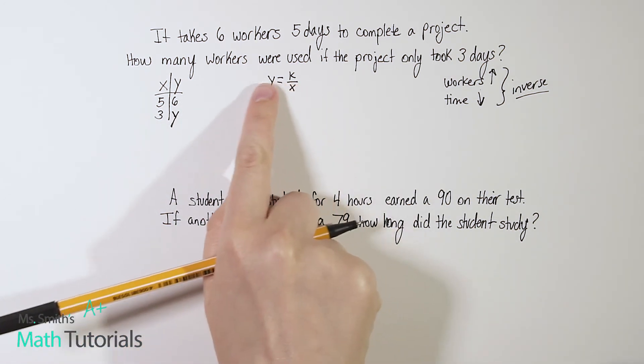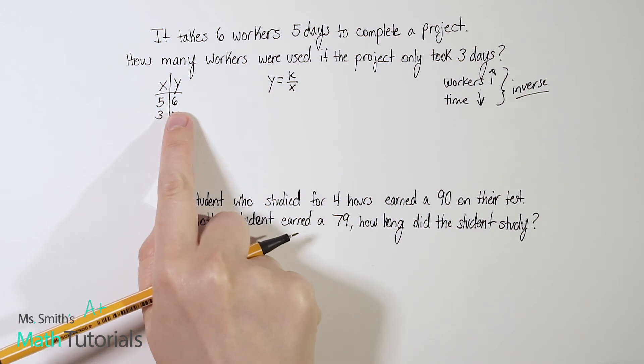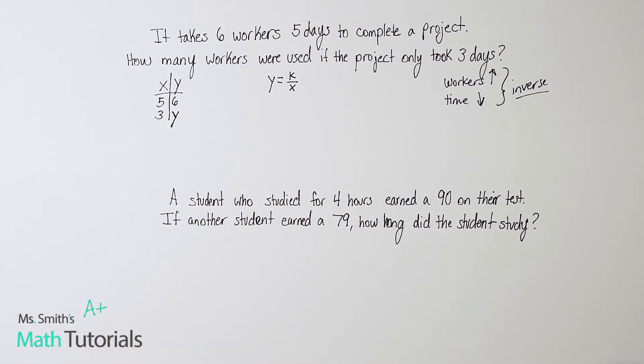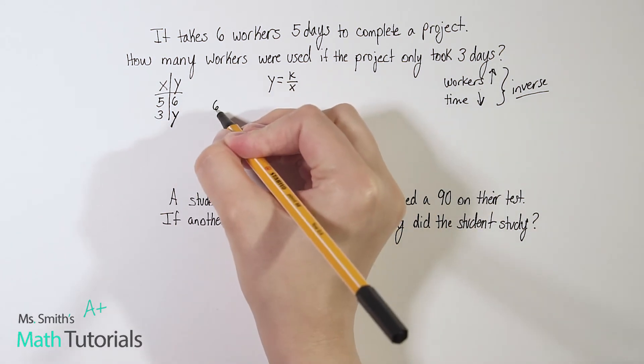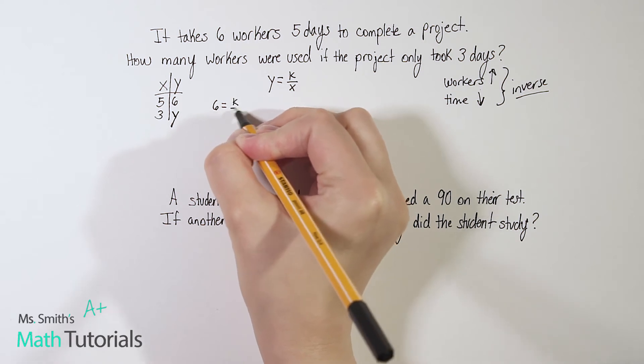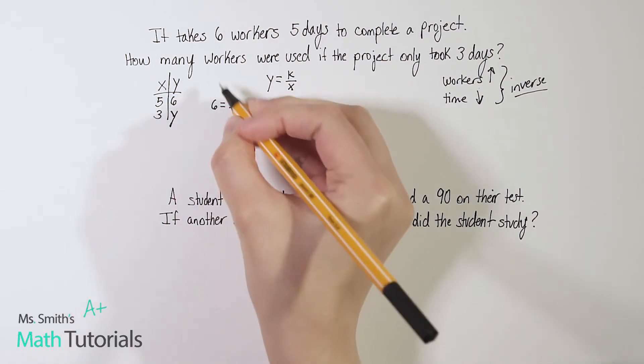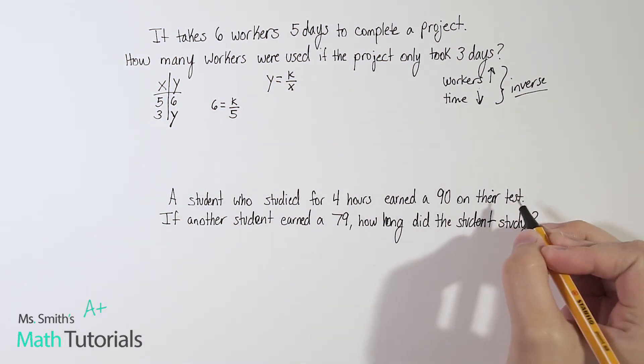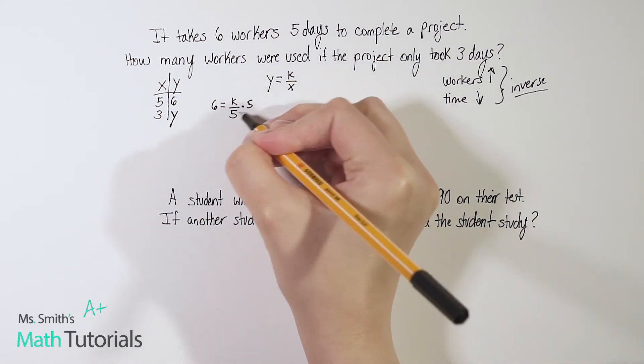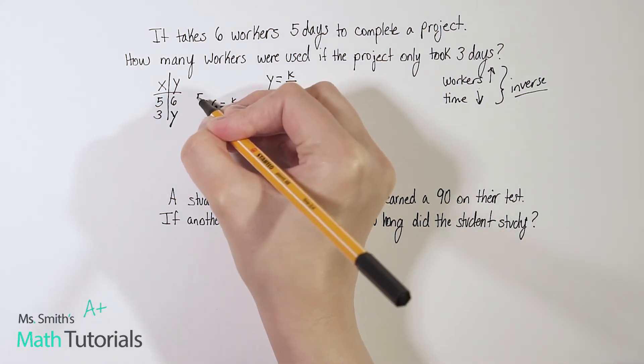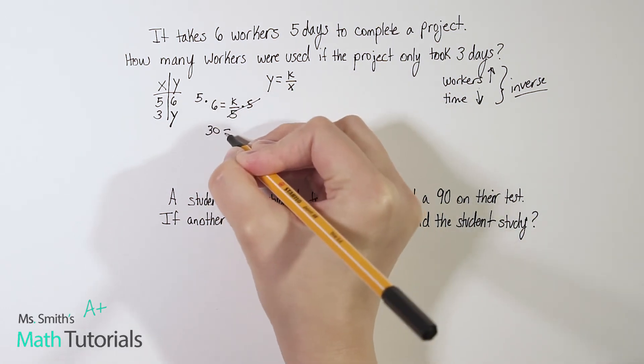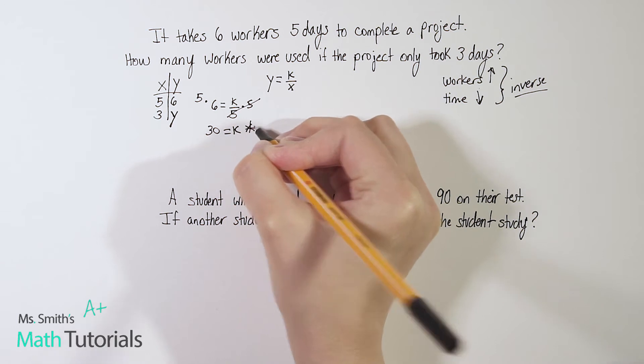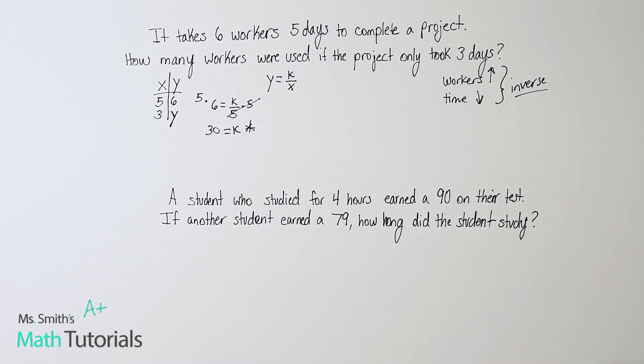So let's go ahead and plug in what we know, that first point, so that we can figure out our K, because we need that to figure out the second point. So for the first one, Y is six equals K over X. X is five. So we're going to multiply by the denominator. Six times five is 30, and there's our K. So we know what the constant of variation is. It's going to be 30.